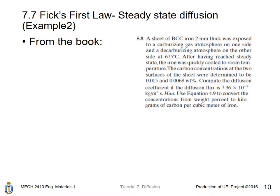Another example from the book. A sheet of BCC iron, 2 mm thick, was exposed to a carbonizing gas atmosphere at one side and a decarburizing atmosphere on the other side at 675 degrees Celsius.